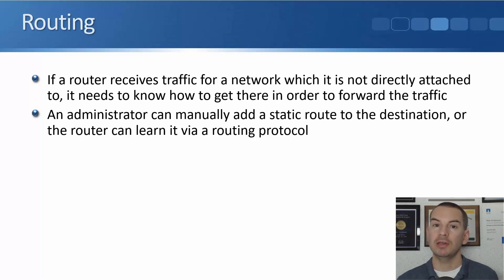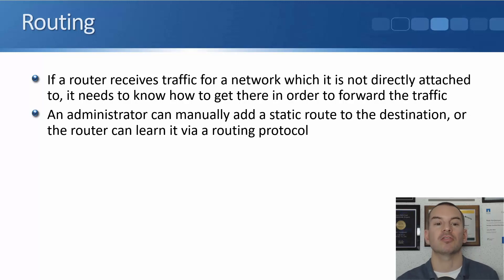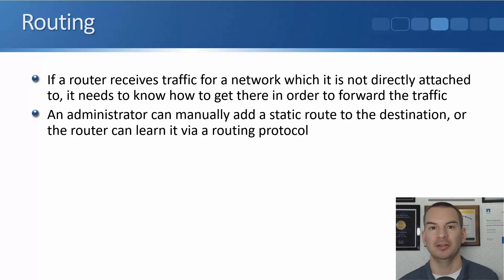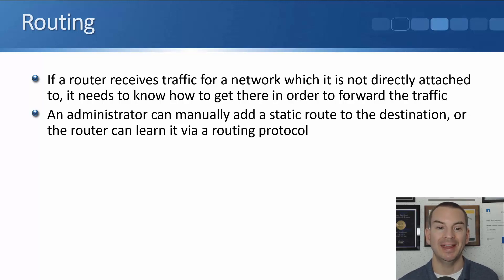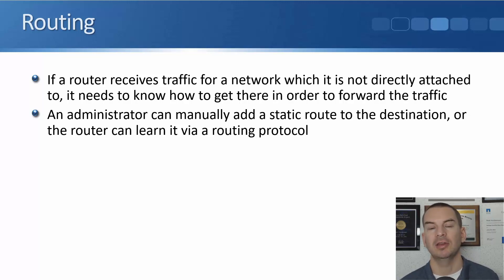If a router receives traffic for a network it is not directly attached to, it needs to know how to get there to forward the traffic. Whenever we configure an IP address on an interface, those connected routes are automatically added. But for networks not directly attached, you need to either manually add a static route or let the router learn it via a routing protocol like RIP, OSPF, EIGRP, BGP, or IS-IS.